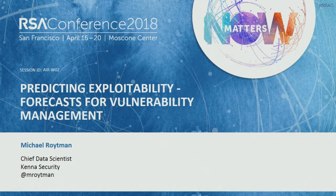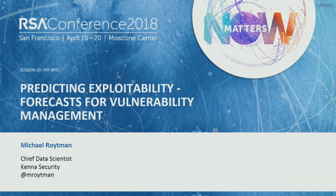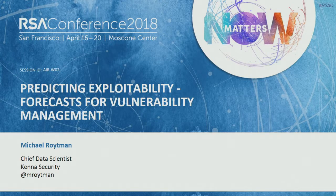Welcome, everyone. My name is Michael Roitman. I'm the chief data scientist at Kennedy Security. This talk is about issuing predictions for when a vulnerability will be exploited, but the takeaways are entirely different. Security is often a pendulum between prevention and detection and response, and there are good reasons for that. Technologies evolve differently in both domains, and I want to talk specifically about the prevention side — what that means, and why it's just now becoming possible in the real predictive sense and not in the FUD predictive sense.